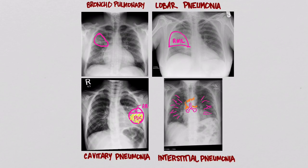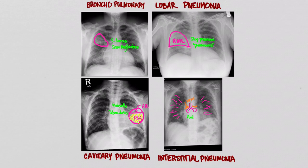You can't say for sure what the cause is radiographically, but bronchopneumonias are associated with things like Staph aureus and other gram-negative bacteria. The common lobar pneumonia is going to be Strep pneumoniae. Cavitary lesions are classically associated with Klebsiella or tuberculosis, and interstitial pneumonias tend to be viral or due to organisms like Mycoplasma.